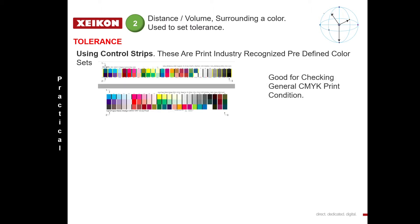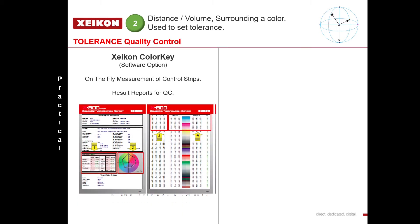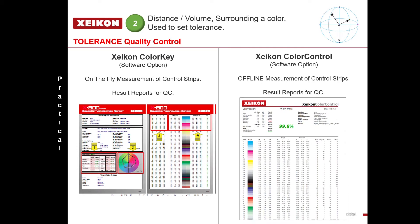To do this we usually use control strips. Here we see two industry-standard control strips, which are very good for checking general CMYK printing conditions. However, with Zycon Color Key, we can generate on the fly a control strip which just contains the colours in that print job — a great way of tracking brand colour reproduction. We can also use Zycon Color Control cloud software, where we do the measurements offline and that data is stored in the cloud.